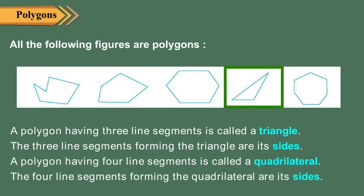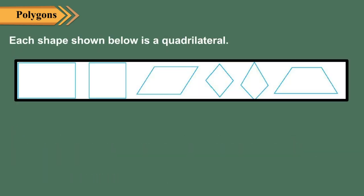A polygon having four line segments is called a quadrilateral. The four line segments forming the quadrilateral are its sides. The arc shape shown below is a quadrilateral.